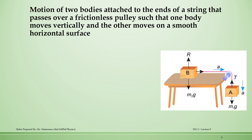Dear students, in today's topic we will discuss the second part, which is the motion of two bodies attached to the ends of a string that passes over a frictionless pulley, such that one body moves vertically and the other moves on a smooth horizontal surface.